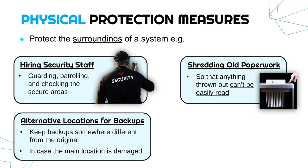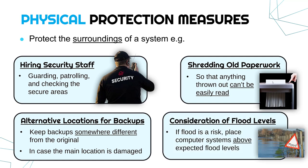Another sensible measure — really a policy — is having alternative locations for your backups. It's essential to back up important data, but the physical part of it is keeping the backup somewhere else, somewhere different from the original. The main location could be damaged and could damage both your original and your backup. If there was a fire and it destroyed both your original server and your backup server, that defeats the whole point. So having a different location for your backup is important.